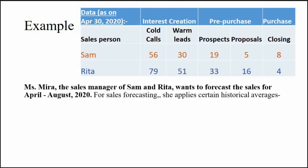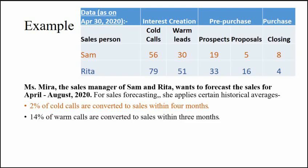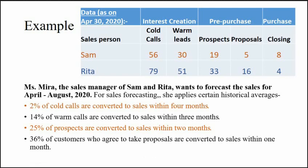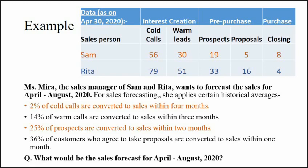Mira is the manager of Sam and Rita. Mira wants to forecast sales for the period of April to August 2020. For this, she uses past conversion rates. Past data shows that 2% of cold calls become closed deals in 4 months, 14% of warm leads become closed deals in 3 months, 25% of prospects become closed deals in 2 months, and 36% of proposals become closed deals in 1 month.